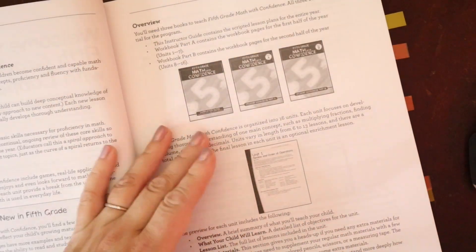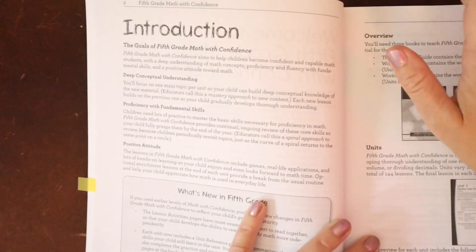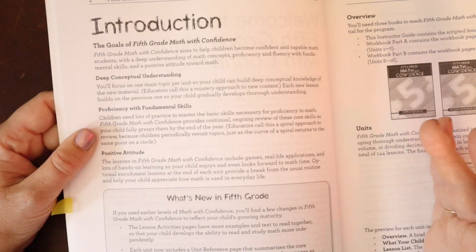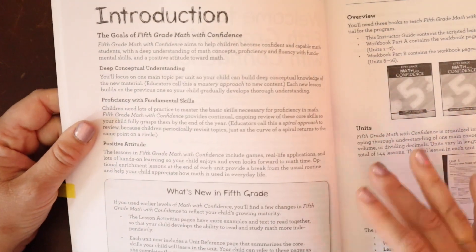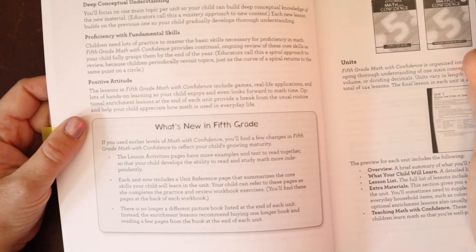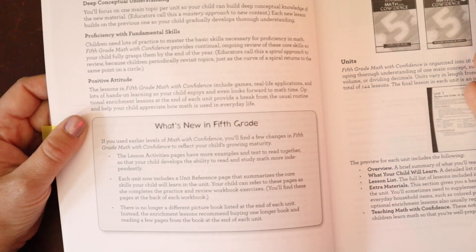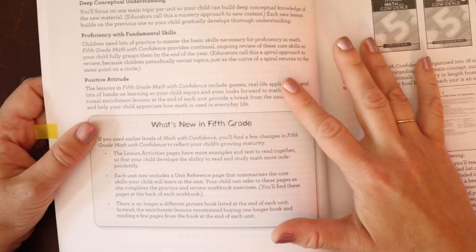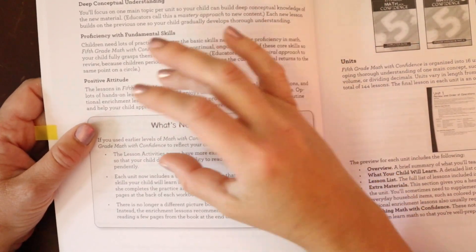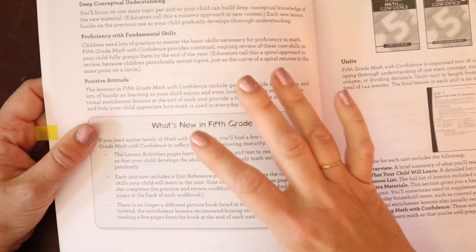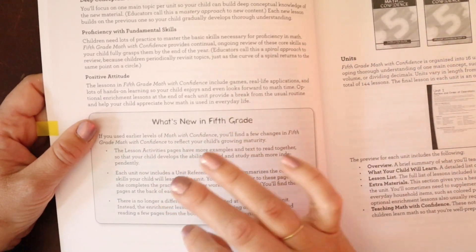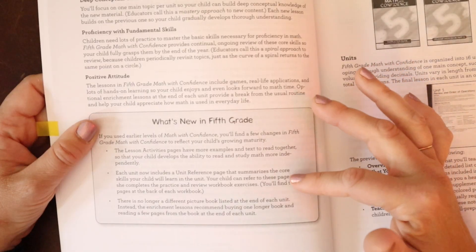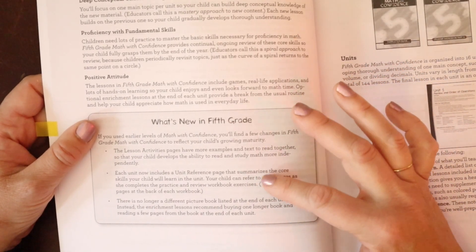And then we have our introduction. So the goals of fifth grade Math with Confidence, what's new in fifth grade math. You'll find a few changes in fifth grade Math with Confidence to reflect your child's growing maturity. The lesson activity pages have more examples and texts to read together so that your child develops the ability to read and study math more independently. So we're moving towards more of a textbook kind of approach with math where there's the learning for the child to read some examples, and then they do the material. Now that said, this is not set up that way. It's just starting to scaffold that and build towards it. Each unit now includes a unit reference page that summarizes the core skills your child will learn. This is great. I really like this unit reference page, and I'll show you what those look like in a minute.